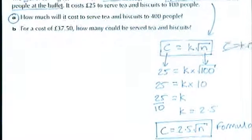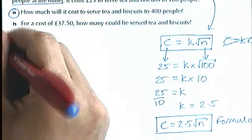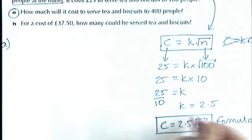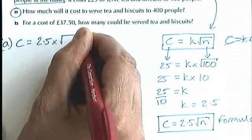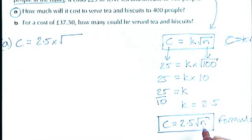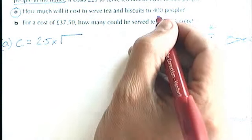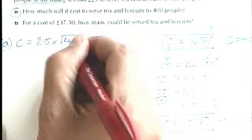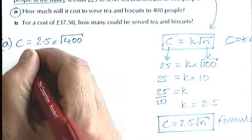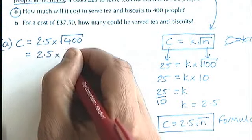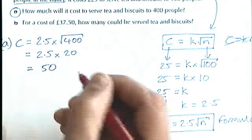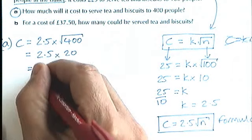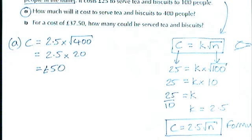Part A asks: how much will it cost to serve tea and biscuits to 400 people? Using the formula C = 2.5√N, with N = 400: C = 2.5 × √400 = 2.5 × 20 = £50. Don't forget to include the units in your answer.